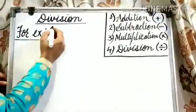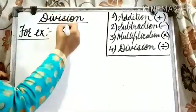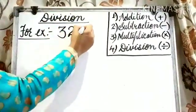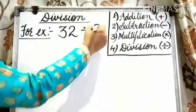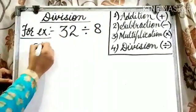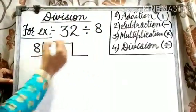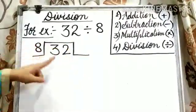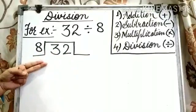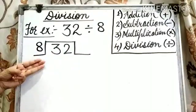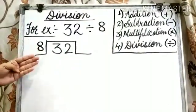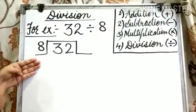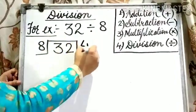Now, in this example, we have to divide 32 by 8. 8 times 1 is 8, 8 times 2 is 16, 8 times 3 is 24, and 8 times 4 is 32. So, we need to write 4 over here.